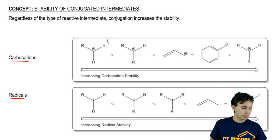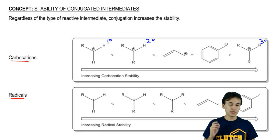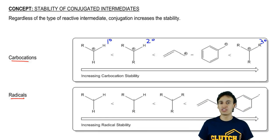As we add R groups, this would be primary, secondary, tertiary. As we add R groups, they become more stable. That should make sense with everything else you've learned about carbocations thus far.